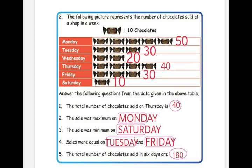Answer the following questions from the data. First question: the total number of chocolates sold on Thursday. There are four toffees — the answer is 40. Second question: the sale was maximum on which day? Looking at the table, 50 is the highest, so the answer is Monday.